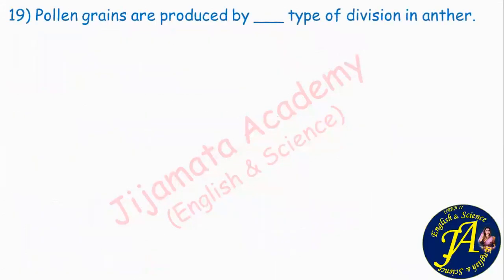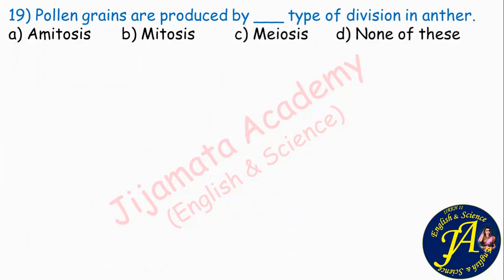Pollen grains are produced by dash type of division in anther. Options are mitosis, meiosis, none of these. Pollen grains are the gametes in plants, and gametes are produced by meiosis. Therefore, option C, meiosis, is the correct answer.